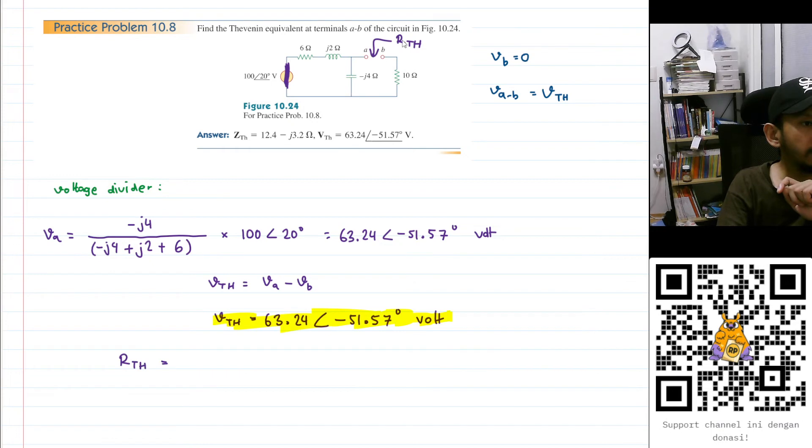Now let's calculate the RTH. We can calculate the RTH - this is in parallel with that. So I will have 6 plus j2 in parallel with minus j4.